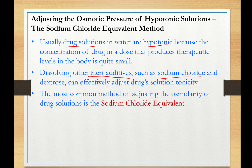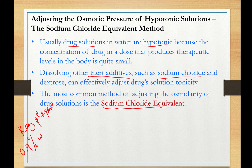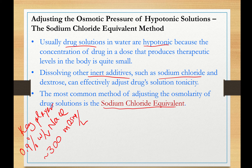The most common method is the sodium chloride equivalent method. The key player in this method is isotonic saline, which is 0.9% weight per volume sodium chloride, because it exerts physiological osmolarity. The osmolarity of this solution is about 300 milliosmoles per liter, or milliosmolar.